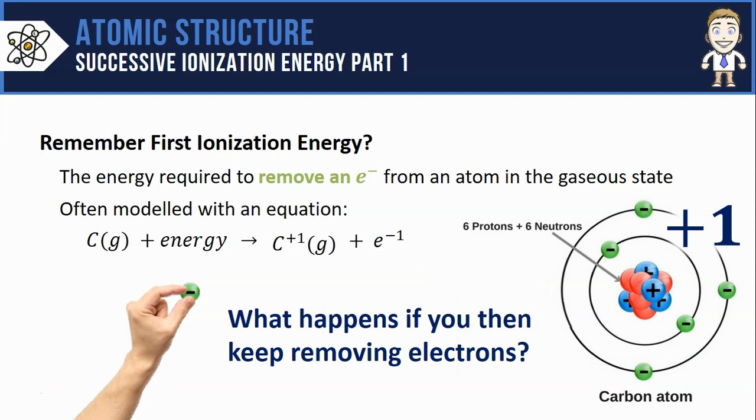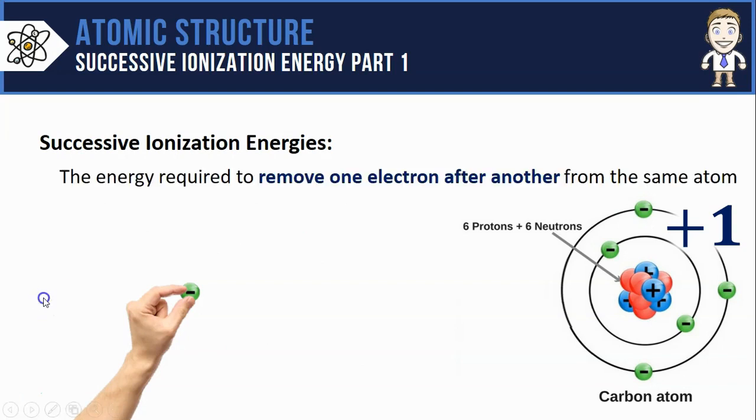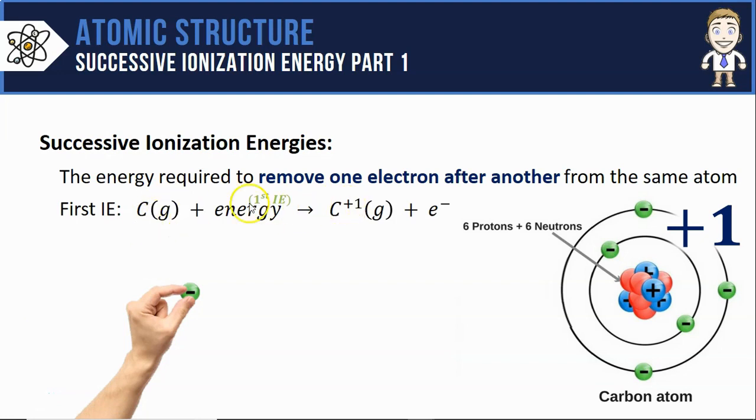In this video we'll take a look at what would happen if you removed that first electron but then kept on removing more, and this is what we mean by successive ionization energies. It's the energy required to remove one electron after another from the exact same atom. So we've already modeled this process to remove the first electron and get the first ionization energy.